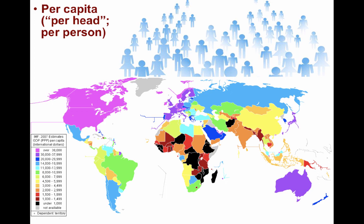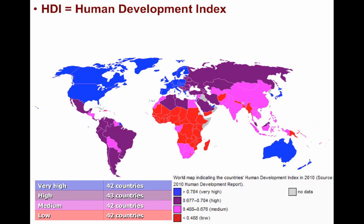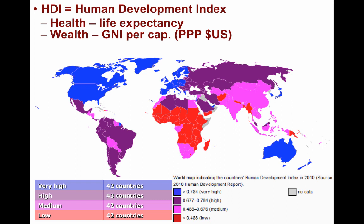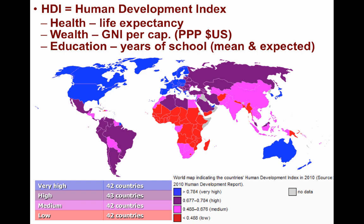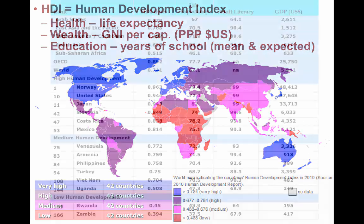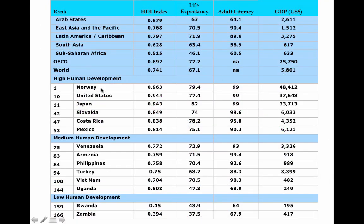So far the measures have only focused on economic development, but what about other areas? This is what the HDI, or Human Development Index, does. It factors in three dimensions: health, wealth, and education. It measures health through life expectancy, wealth through GNI per capita with purchasing power parity in U.S. dollars, and education through the mean years of schooling and expected years of schooling. These three measures are put into a formula with the highest score being one and the lowest being zero. Norway and other Scandinavian countries are usually towards the top, while the United States has been closer to around number 10.